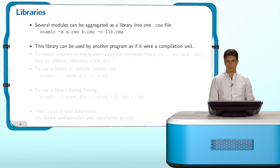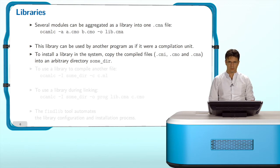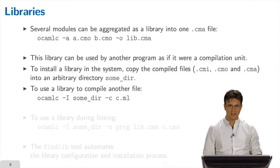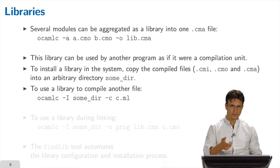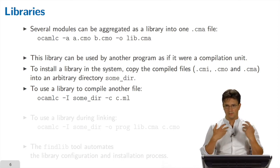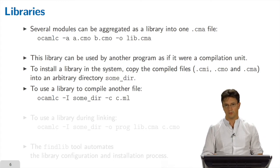Now, once you have a library, it can be used by another program exactly as if it were a compilation unit. To install a library in the system, you just have to copy the compiled files .cmi, .cmo, and .cma into some directories that you choose. After that, if you want to use the library to compile another program, you just use the option -I followed by the name of the directory in which the library is installed, and you will get all the exported values and modules that are available in the library.